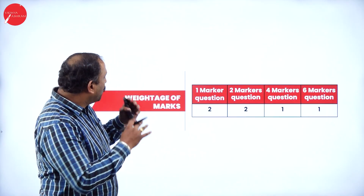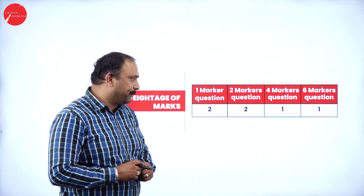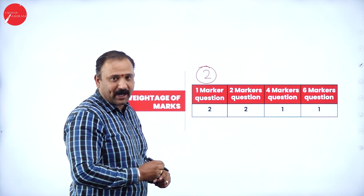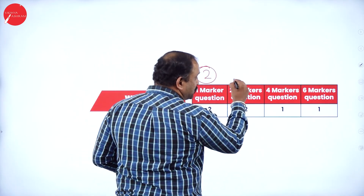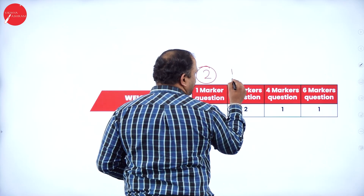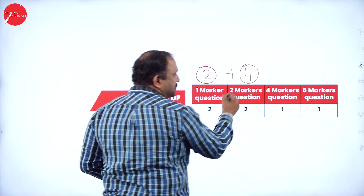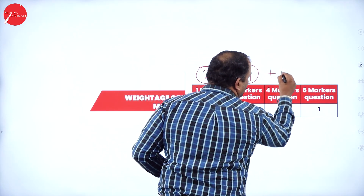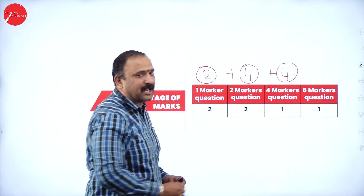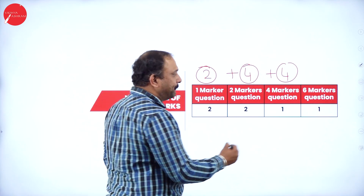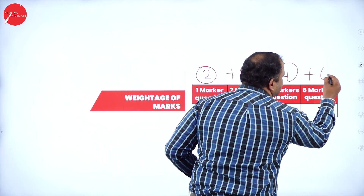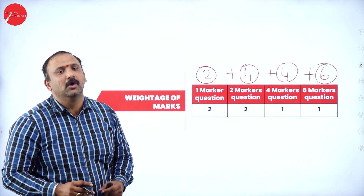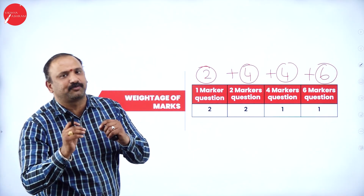Now what is the weightage for this particular chapter? If you look here, there will be 2 one-mark questions, so you can score your 2 marks here, followed by 2 two-mark questions, so that makes it another 4 marks. So 2 plus 4, you have 6 marks. One 4-marker, so 6 plus 4, you will have 10 marks, plus another 6 marks coming from here, so that will work out to almost 16 marks from this chapter.